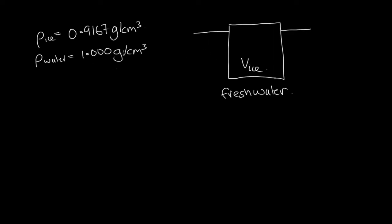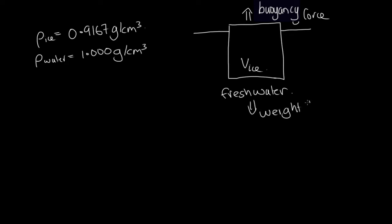And the density of the water is equal to 1.000 grams per centimeter cubed. Now if this was salt water it would be slightly more dense, but in this demonstration it was fresh water, so we're going to be using fresh water in our calculation. We know that the net force acting on our ice block is 0 because the ice block is not moving. So we've got a buoyancy force pushing the iceberg up and a weight force pushing the iceberg down, and these two forces must balance each other or the iceberg would accelerate.